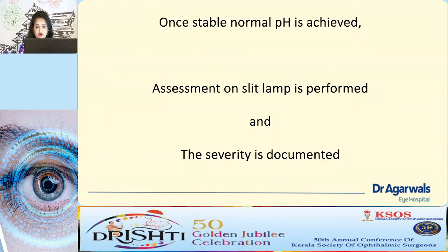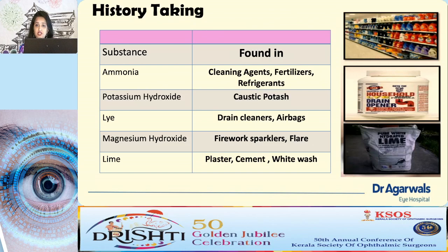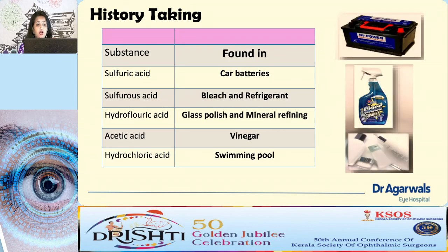Once a stable pH is achieved, proceed with slit lamp assessment and document severity. Common chemicals: ammonia found in cleaning agents, fertilizers, refrigerants; lime found in plasters, cements, whitewash. Acids include sulphuric acid from car batteries — a very strong acid — and hydrochloric acid seen in swimming pools, which is comparatively weaker. This history is important because each chemical has its own mechanism and prognostic value.